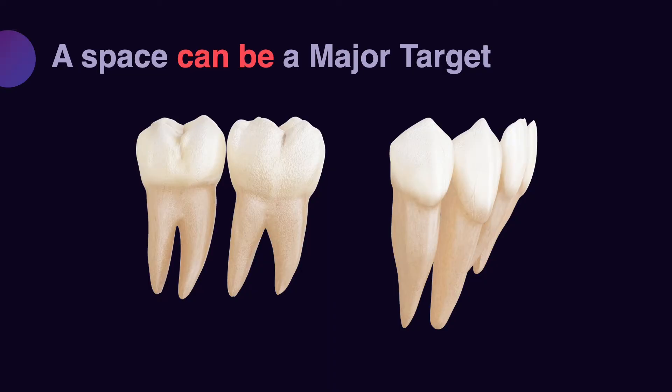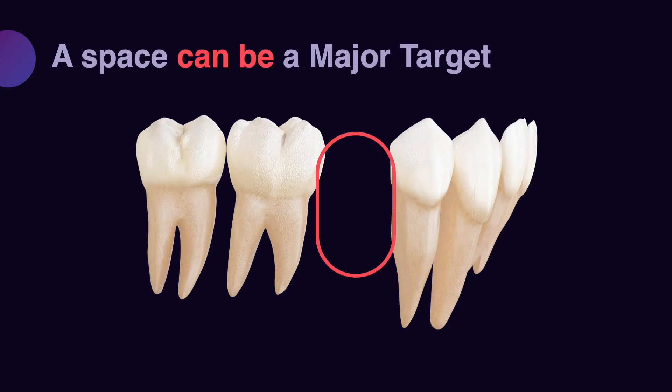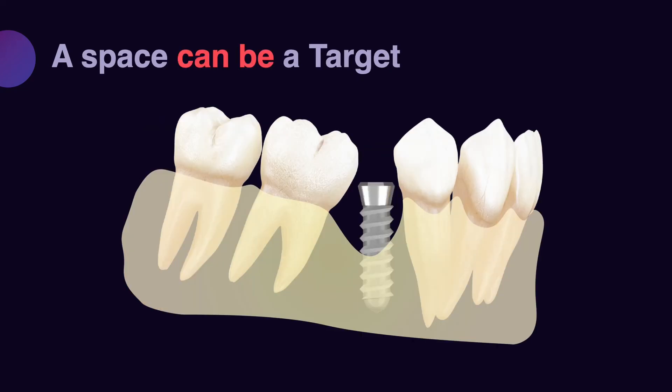A space by itself can be a major target. For example, if you have a missing tooth and the primary tooth is still there, if you just want to maintain the primary tooth then it is not a major target. But if you are planning to remove the tooth and place an implant in that area, you need to adjust the space accordingly — so that becomes a major target. Or maybe you decide you want to close the space. Again, that is another major target that needs to be handled.